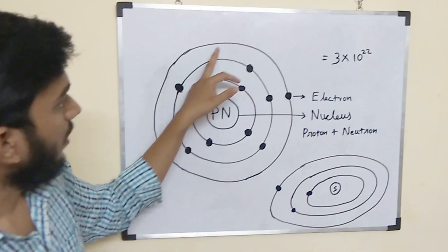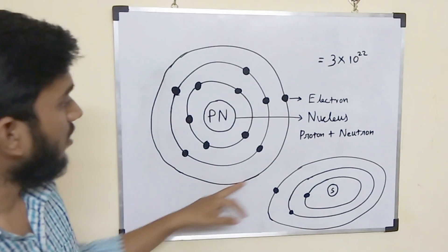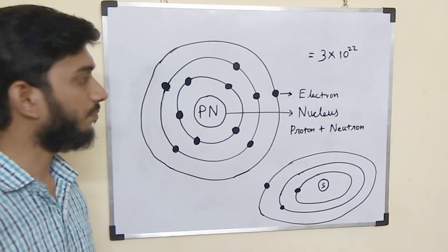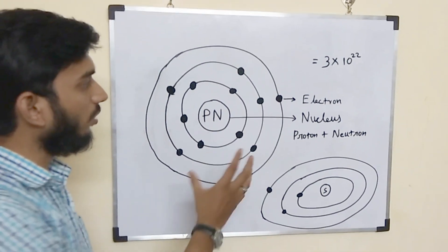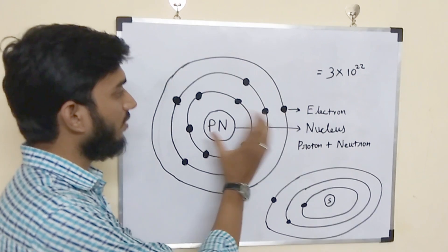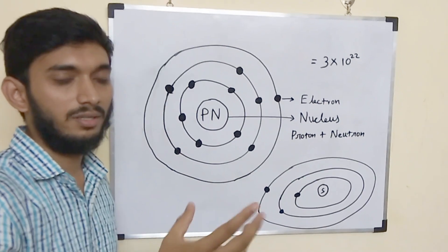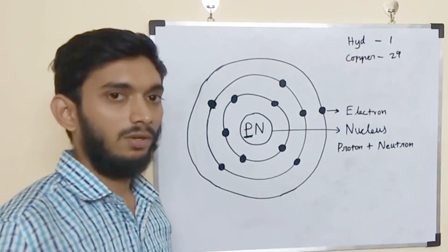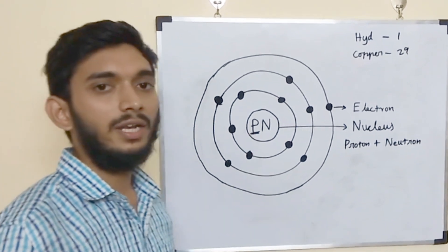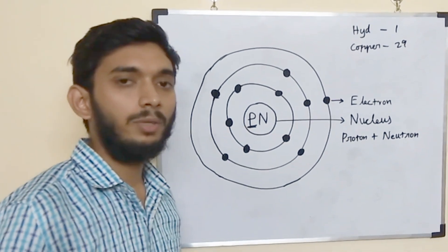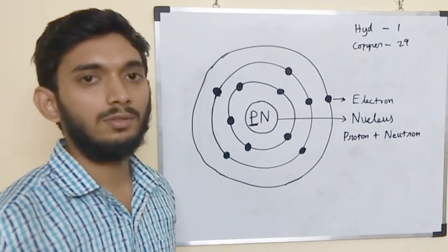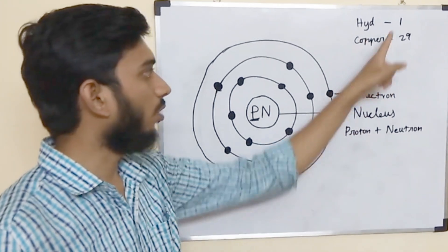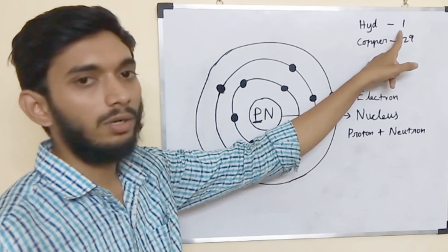This is the last band. We need to remove the electrons from the outermost shell. We aim to produce electricity. The atomic number is the number of protons. For hydrogen, the atomic number is 1.